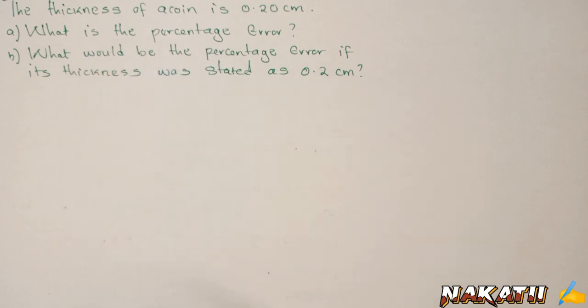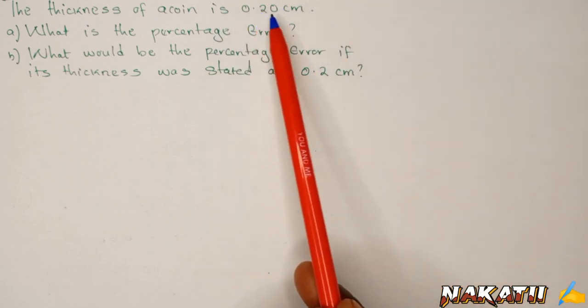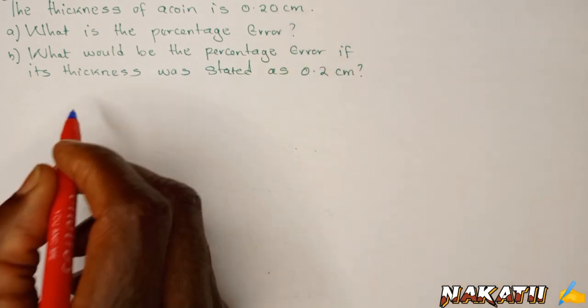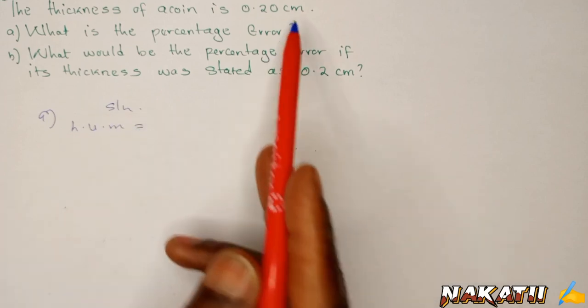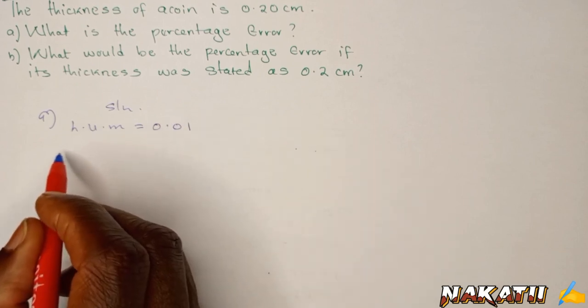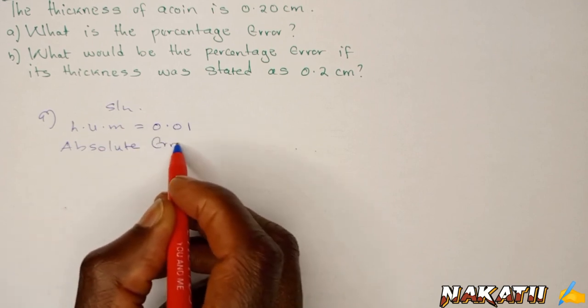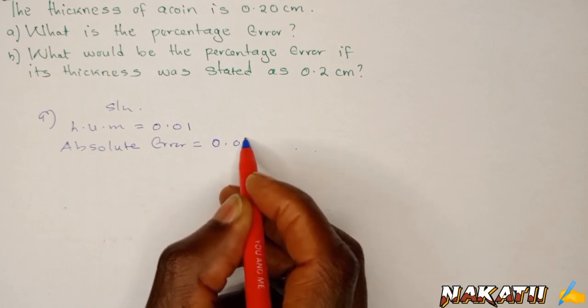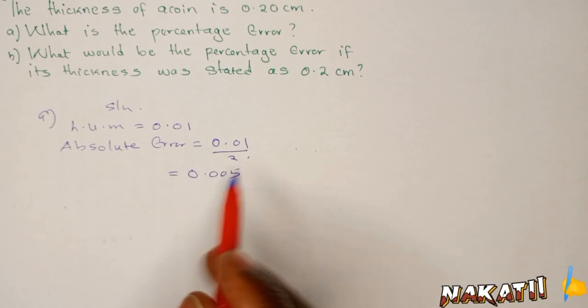To get the percentage error, first you need to find the absolute error. We always check the least unit of measurement. When there are two decimal places, the least unit of measurement is 0.01. So our absolute error will be 0.01 divided by 2, which equals 0.005.